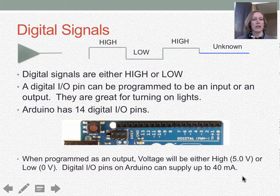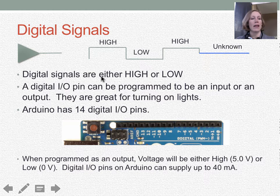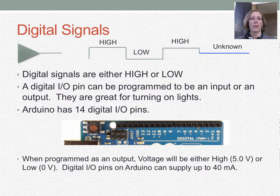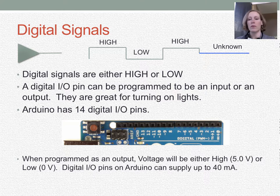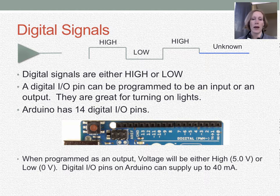Let's talk about what a digital signal is. Digital signals are either on or off, high or low — they can only recognize either a high or low state. Somewhere in between, we don't know what that is. A digital input-output (I/O) can be programmed to be either an input or an output, and we're going to use those to turn on lights. When programmed as an output, current can flow and we can set the voltage for that pin either high or low. It can supply up to 40 milliamps of current.